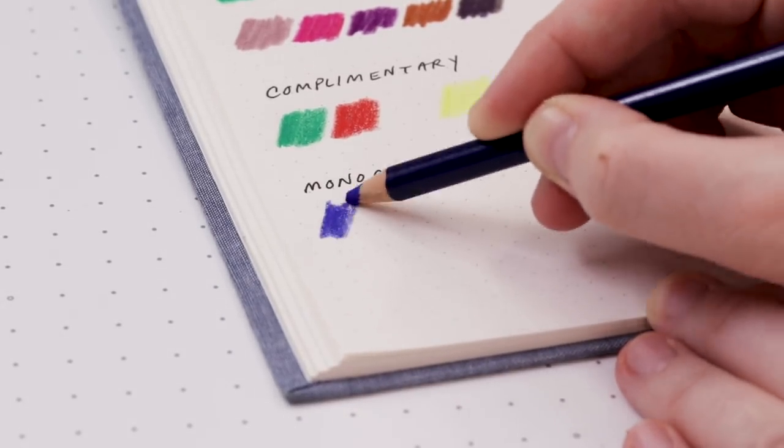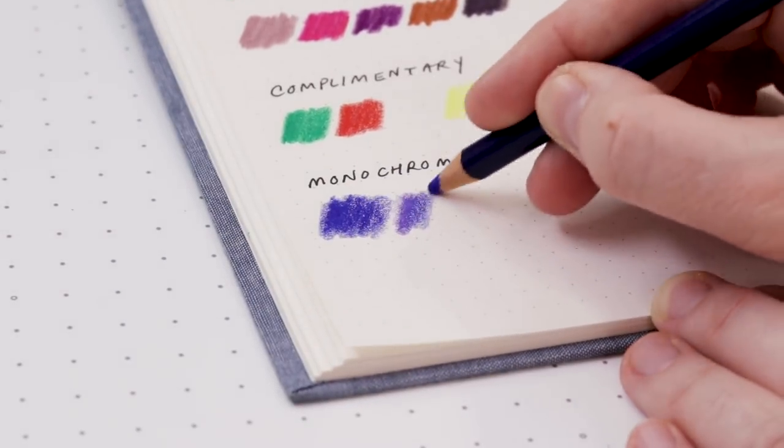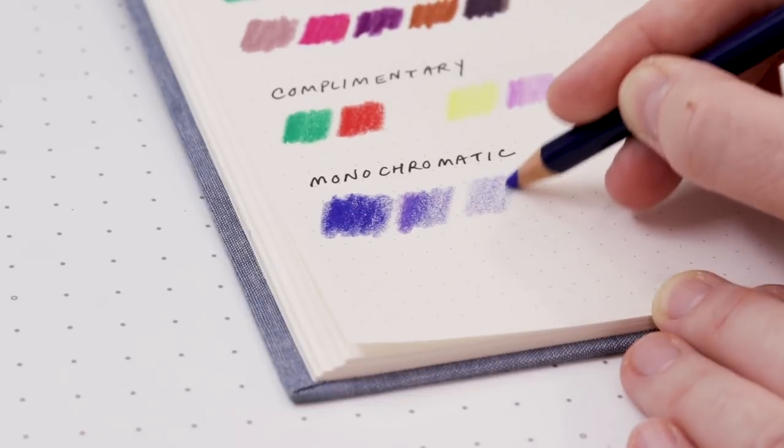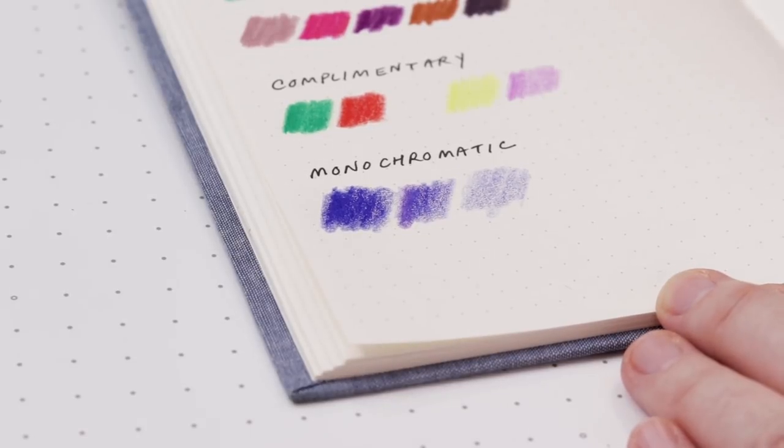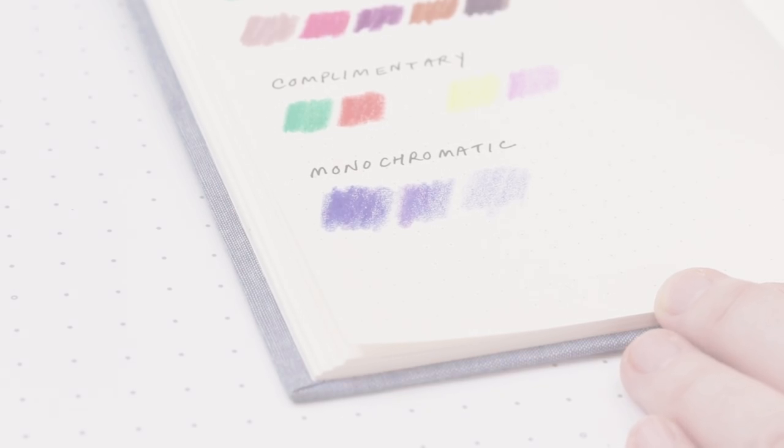And then finally, a monochromatic scheme is one that we might incorporate into our art, and that's where we take one color and we use varying shades of that single color in order to create contrast. An example of this is the blue floral watercolor that we did on the channel last year.